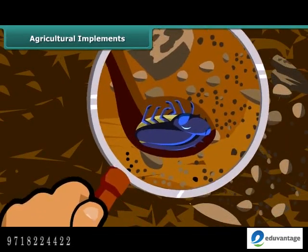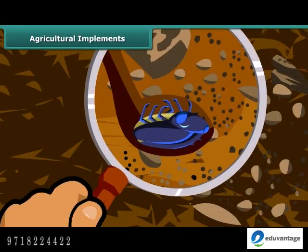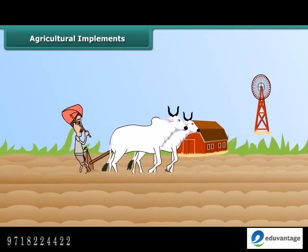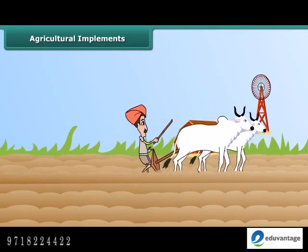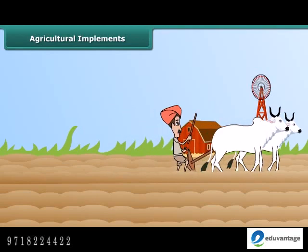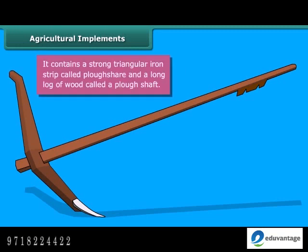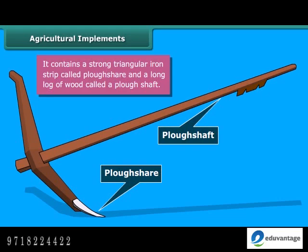Earthworms and microbes add humus to the soil. Turning and loosening of soil brings the nutrient-rich soil to the top, and these nutrients are then used by the plants. Now look at this farmer — he is plowing the field using a plow made of wood. It contains a strong triangular iron strip called a plowshare, and the main part of the plow is a long log of wood called the plow shaft.